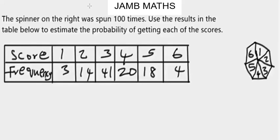Let's look at a typical question involving probability experiments to know when a result is biased or fair. The question says: the spinner on the right was spun 100 times. Use the results in the table below to estimate the probability of getting each of the scores.